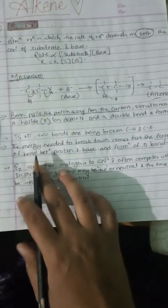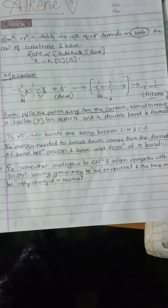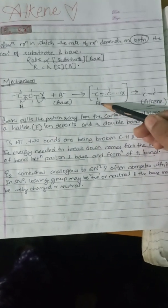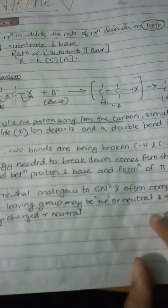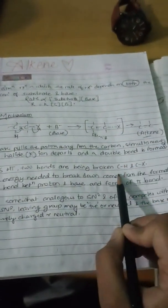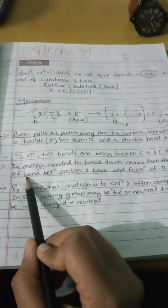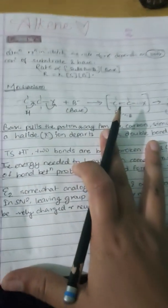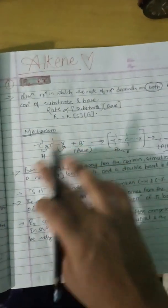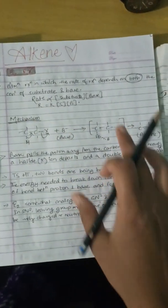This is the transition state — it is a single concerted step. In the transition state, there is a breakdown of the C–H bond and the C–X bond simultaneously, along with the formation of a pi bond. The energy needed to break down the C–H and C–X bonds comes from the formation of the bond between the proton and the base, and the formation of the pi bond. This is similar to SN2 second order kinetics, but the nucleophile acts as a base.